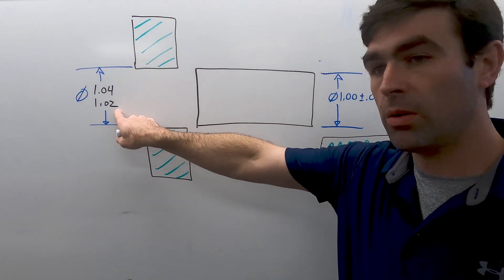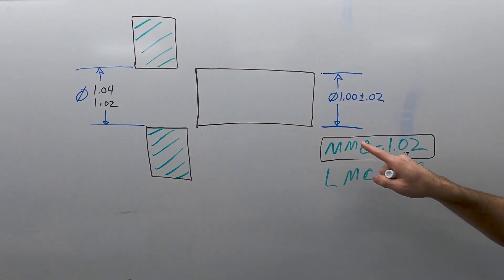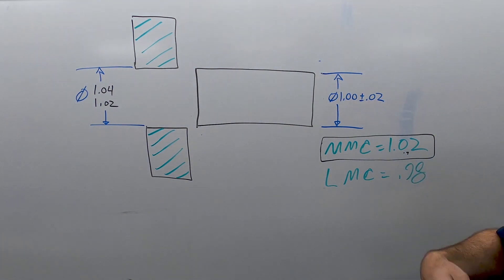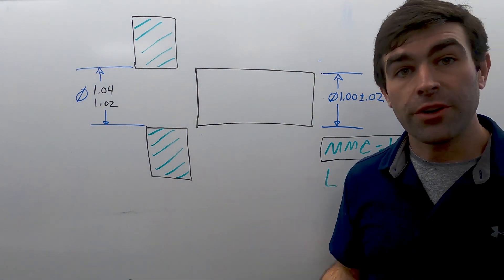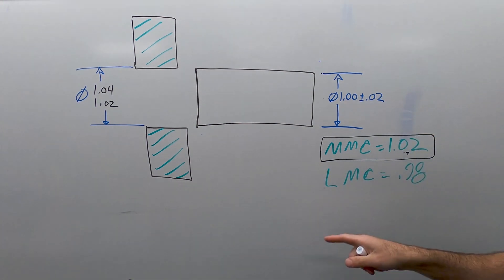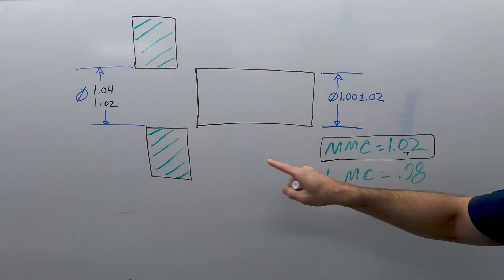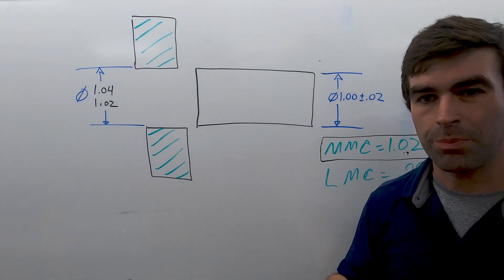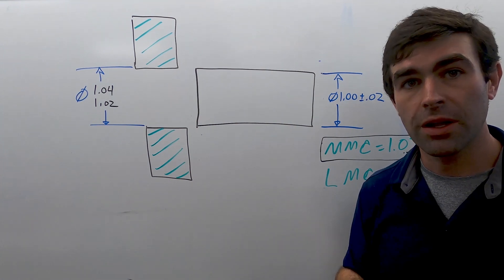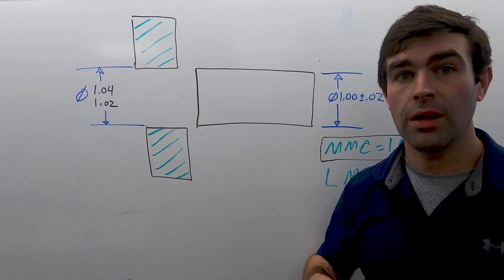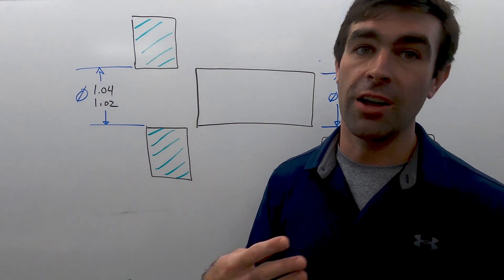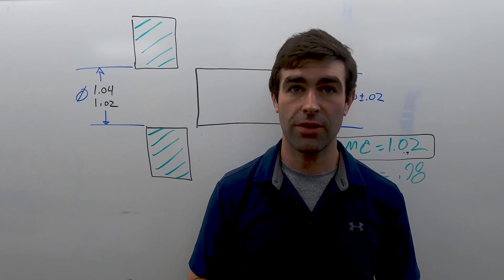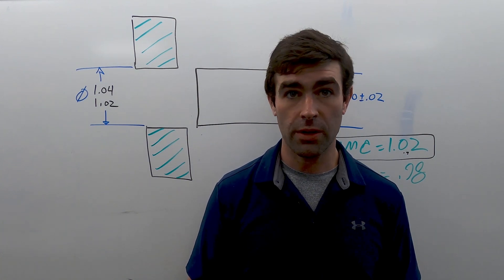So if the hole comes in small, 1.02, the pin comes in big, they'll still fit. If I wanted to make an interference fit, I would make it so that the hole would always be smaller than the largest the pin could be. So that's just the basics of how fits work. There's huge tables in machinery's handbook. We won't be able to go over it online this semester. We'll catch up to it in SOLIDWORKS next semester. You're welcome to go through the book and give it a shot.